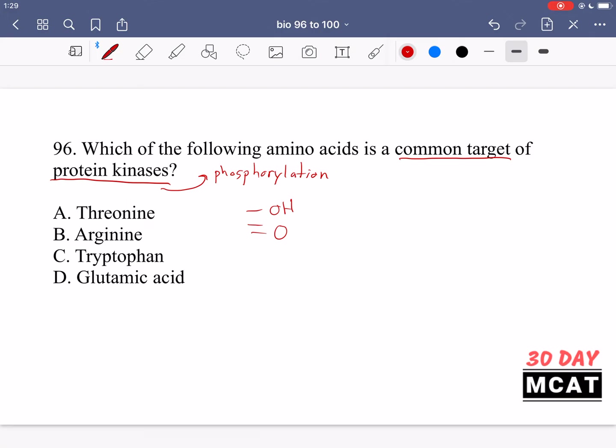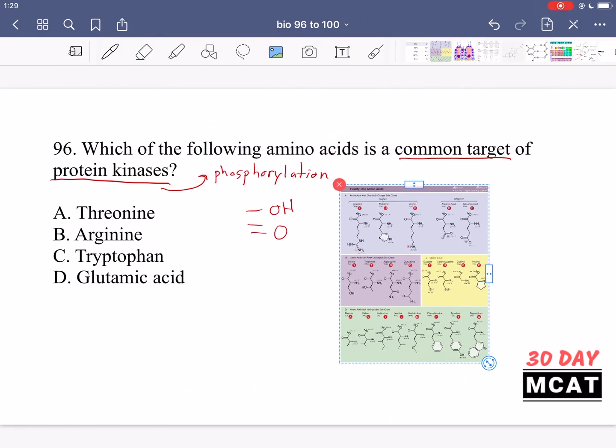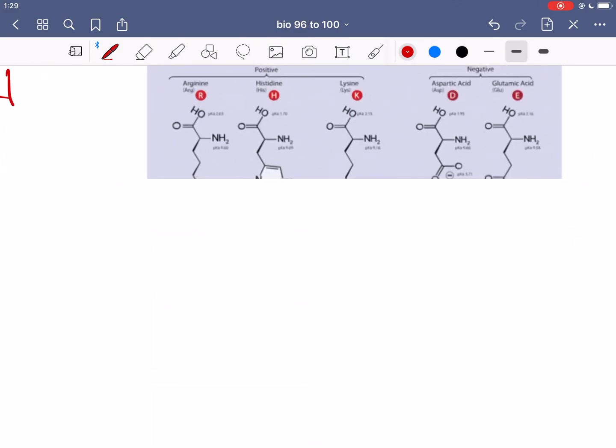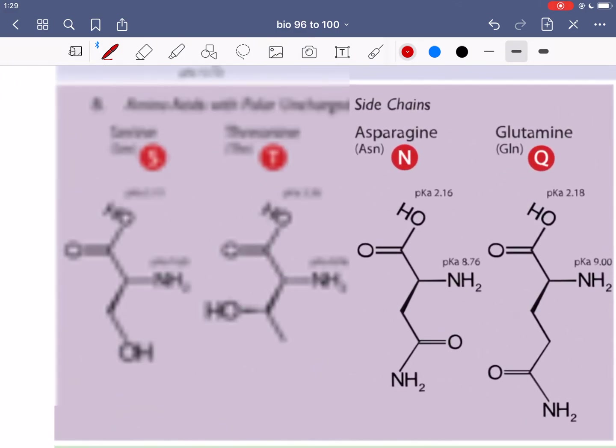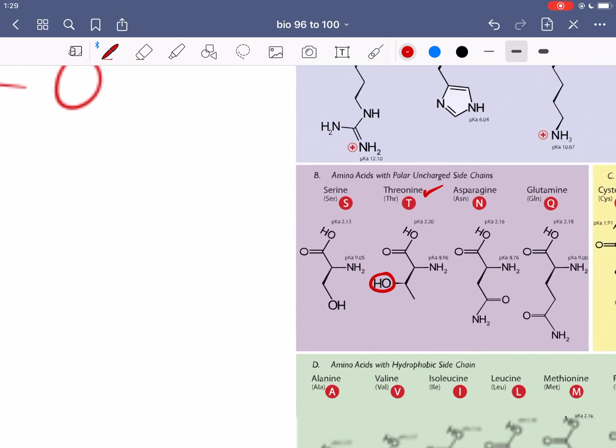If we look at our amino acids that are given to us, here is a chart with all the amino acids. First we have threonine which should be right here. And look at that, there's the OH group. So threonine could be phosphorylated.